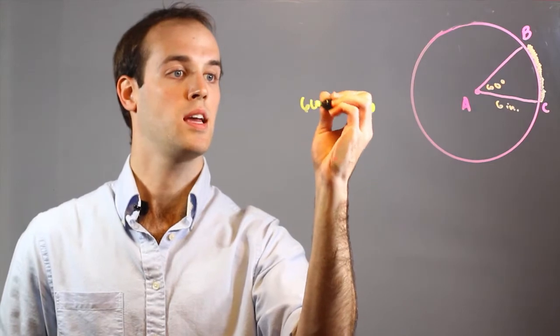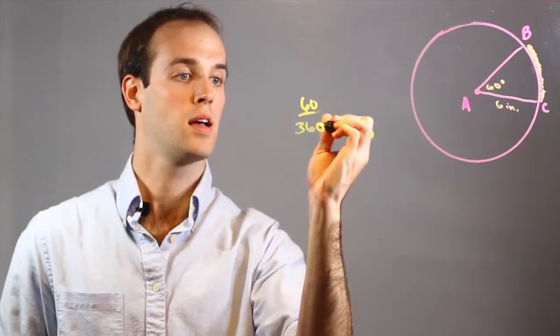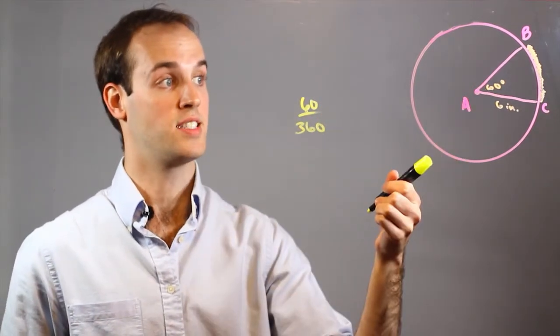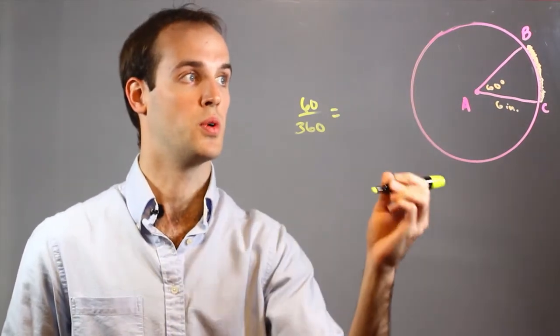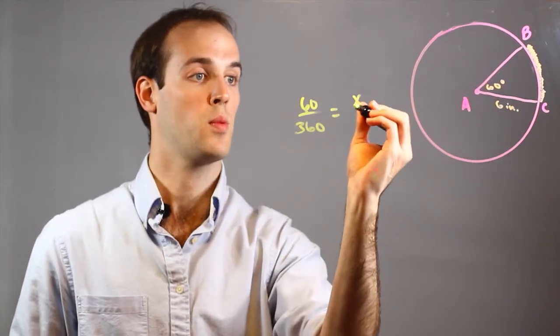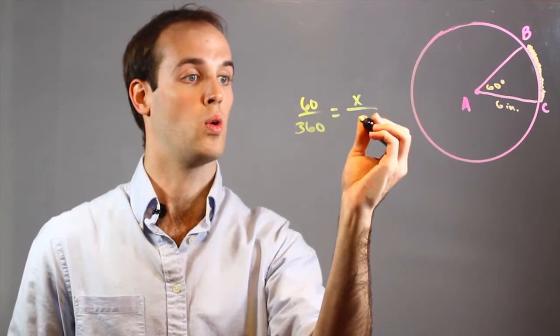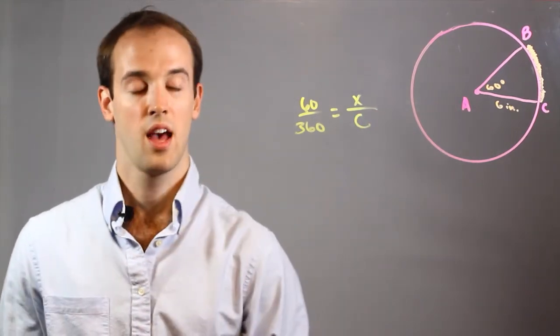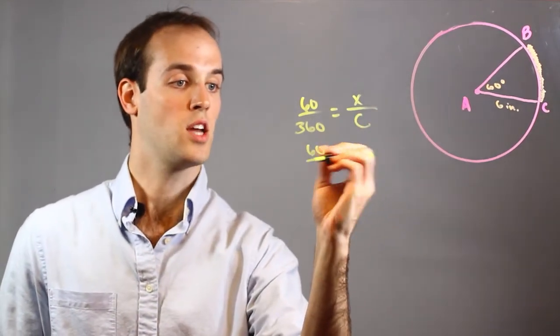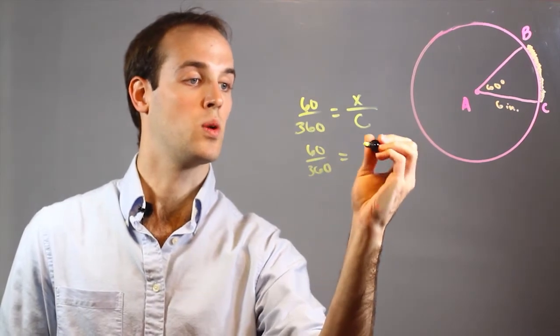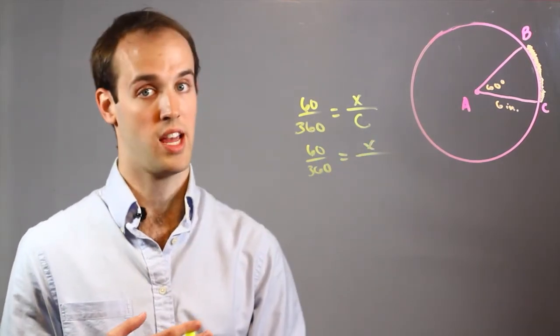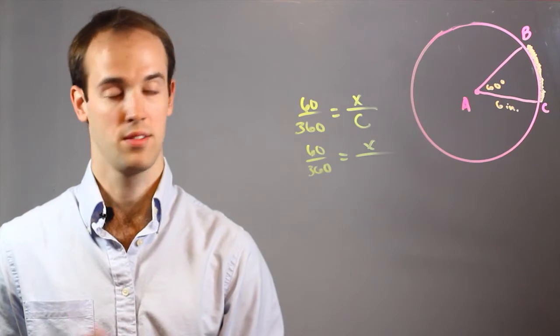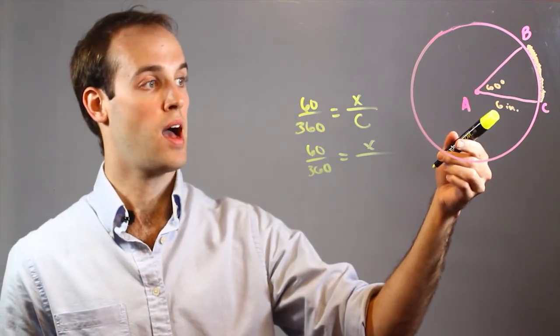I will do 60 over 360, which is the part that the sector is to the whole circle, is equal to arc BC, which I'll abbreviate with x, is to the whole circumference. So, 60 over 360 equals x over circumference, which is 2 pi r. So, 2 times pi times 6.